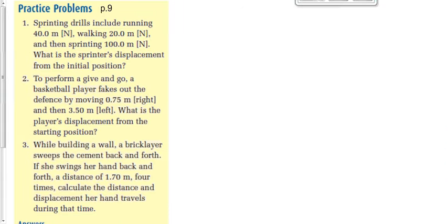Practice Problems from the textbook, page 9. Question three: while building a wall, a bricklayer sweeps cement back and forth. She swings her hand 1.4 meters four times. Calculate the distance and displacement her hand travels. The 1.4 meters is a displacement — it's the change in where her hand is, not where her hand is located.